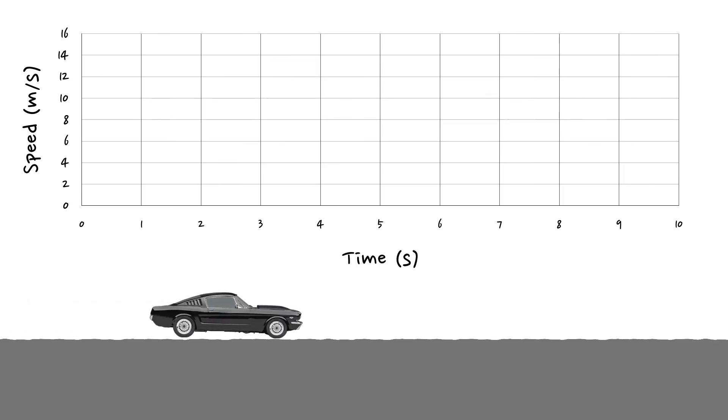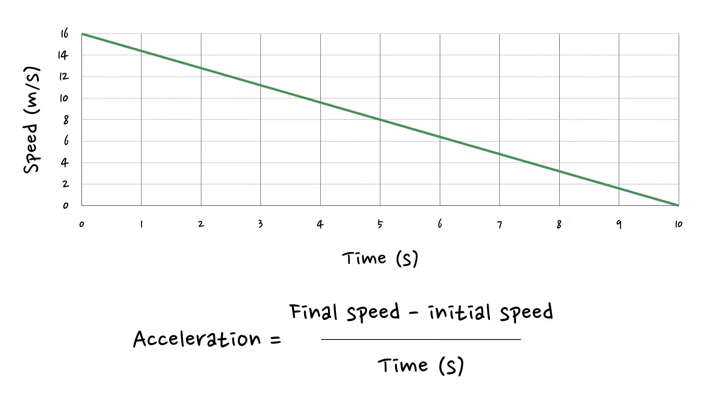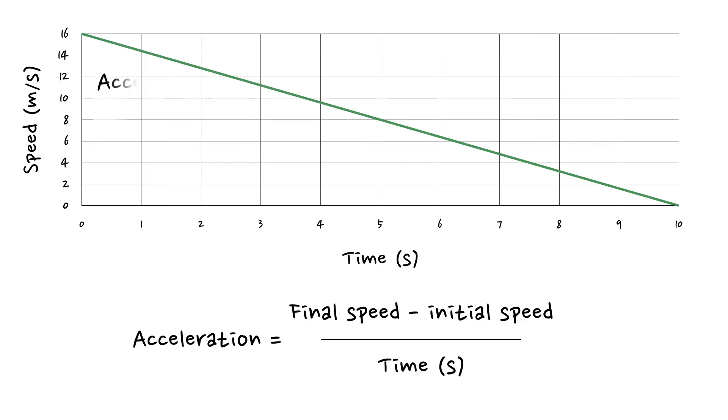Let's look at an example. Imagine we've got this car here that's traveling along at 16 meters per second. And it takes 10 seconds for it to slow down to a stop. All we've got to do is exactly the same calculation that we've done already. We've got final speed minus initial speed, divide that by the time it took for it to make that change. So we've got final speed is 0 meters per second. Initial speed was 16 meters per second. So 0 minus 16 divided by 10. So that's minus 16 divided by 10.